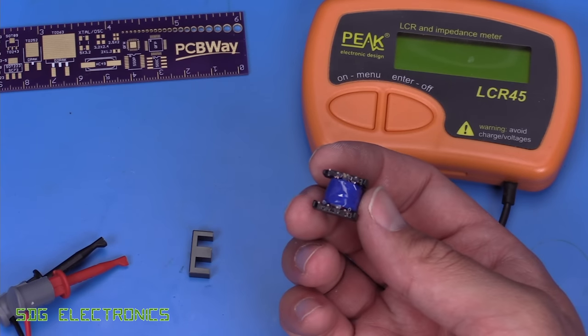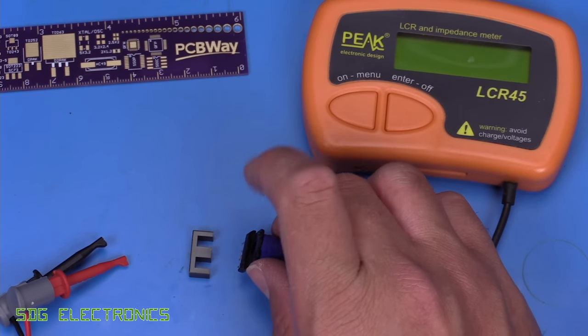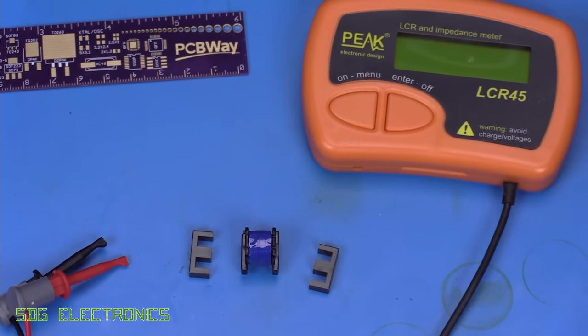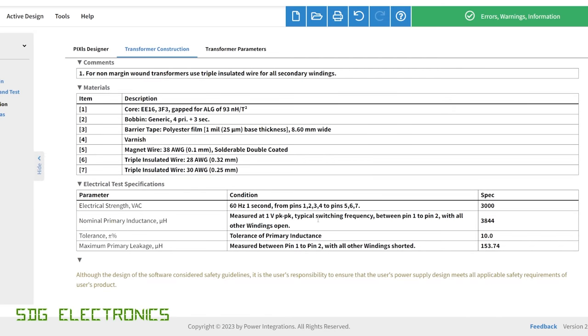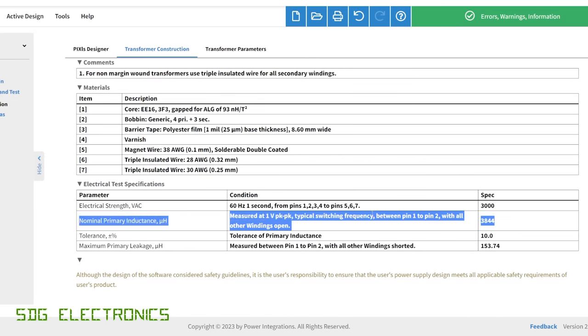Now that we've wound our transformer, the next thing we need to do is gap the core to set the primary inductance. And if we look at the tool once again, it tells us here that our primary inductance should be about 3844 microhenries when all of the windings are open and we're testing at the switching frequency.